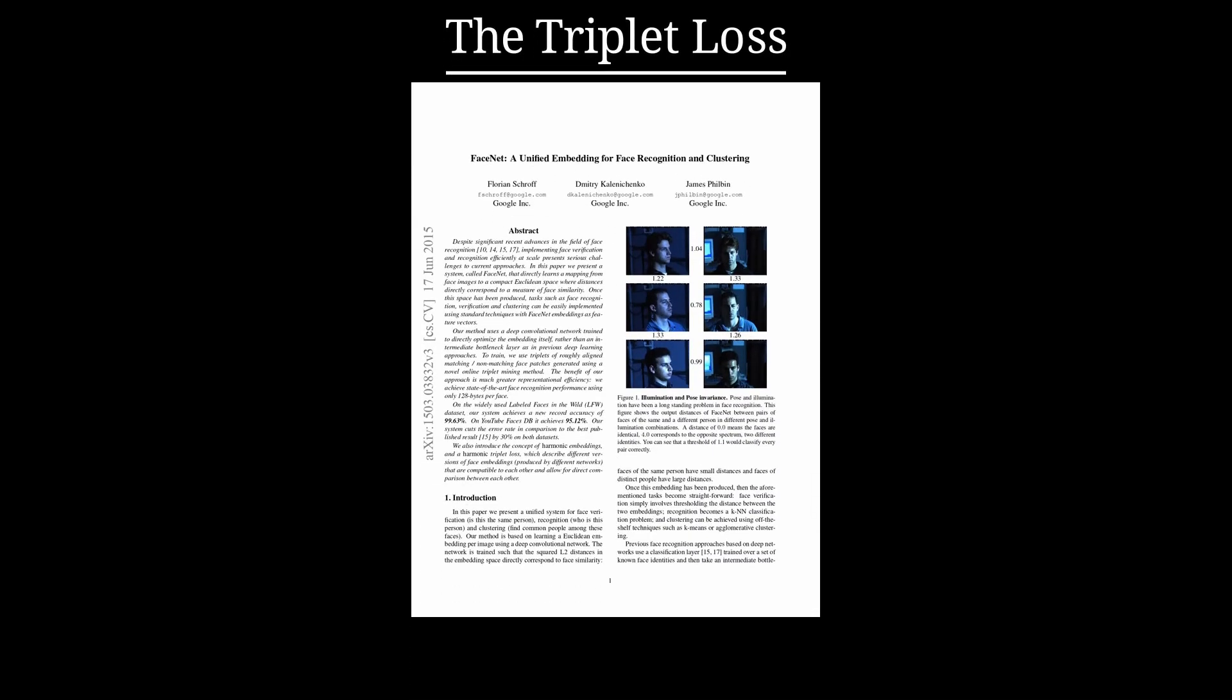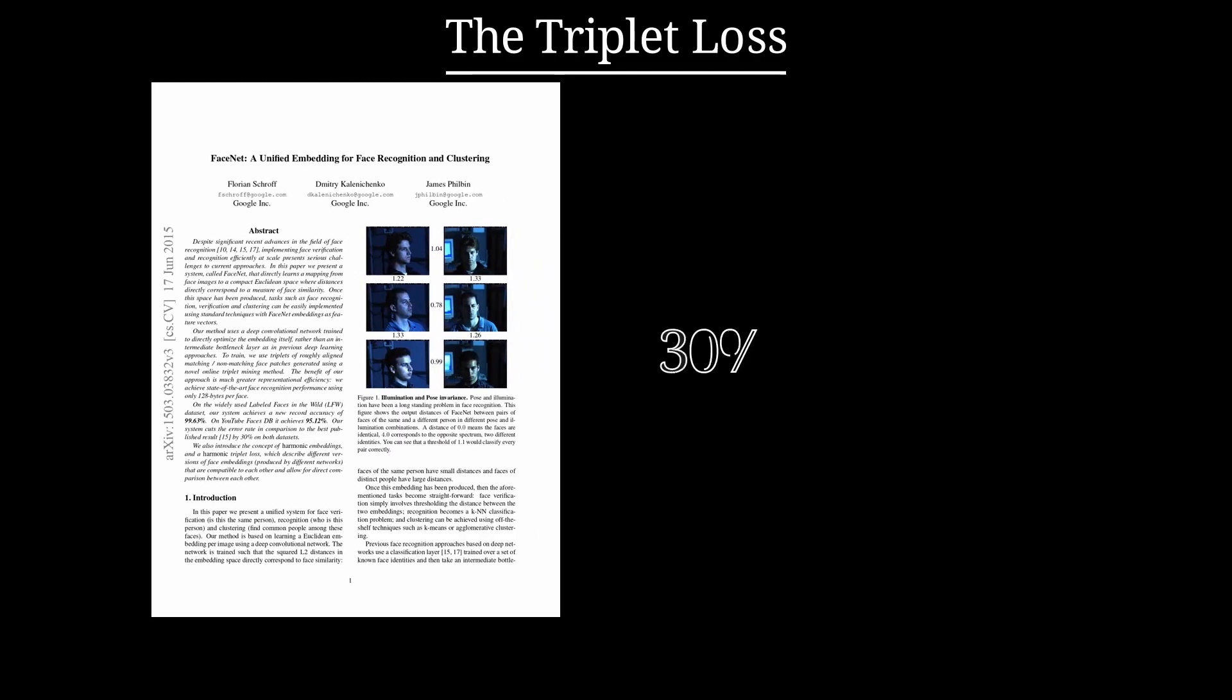Another well-known type of contrastive loss is the triplet loss. It was popularized by the FaceNet paper, which focused on facial recognition and achieved an impressive 30% reduction in error rate compared to other state-of-the-art methods at the time.